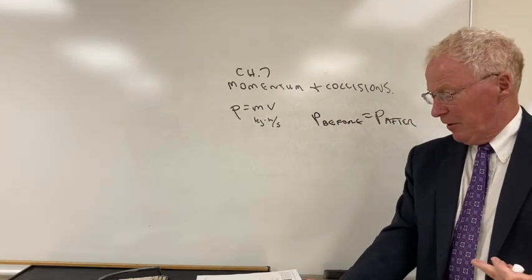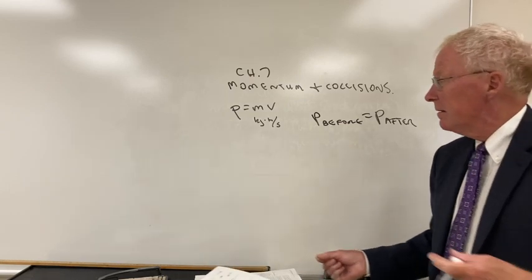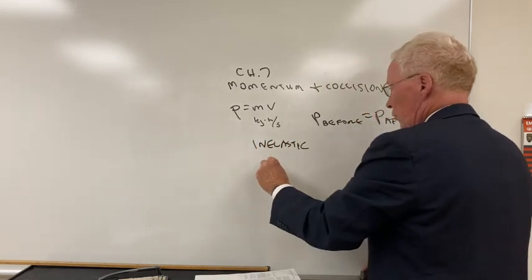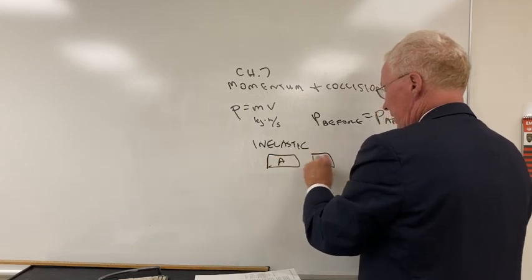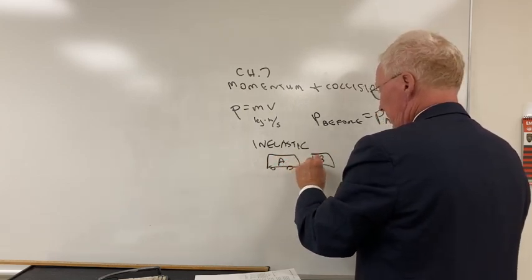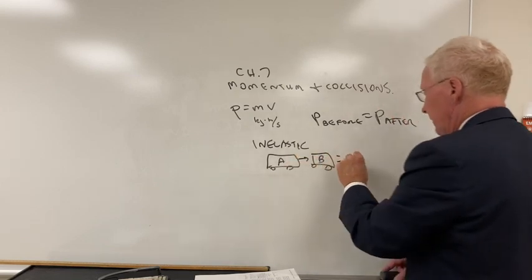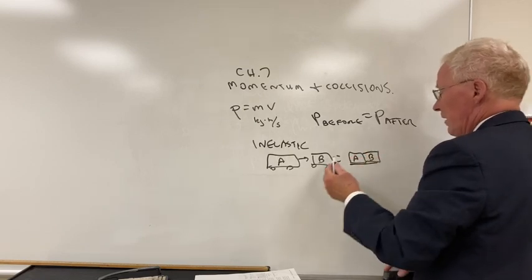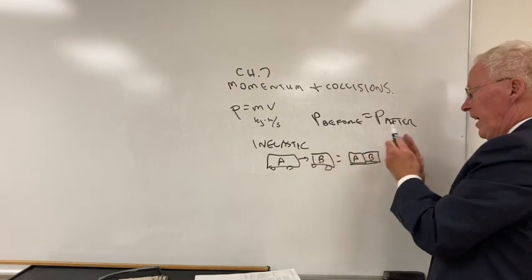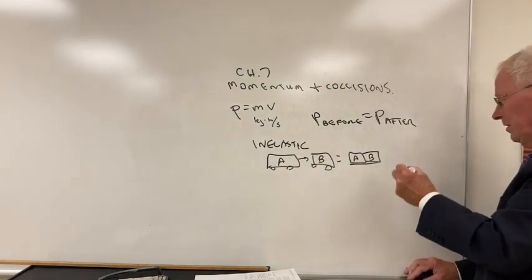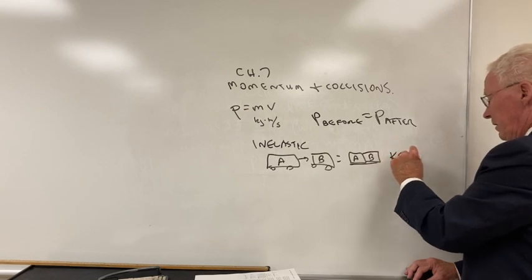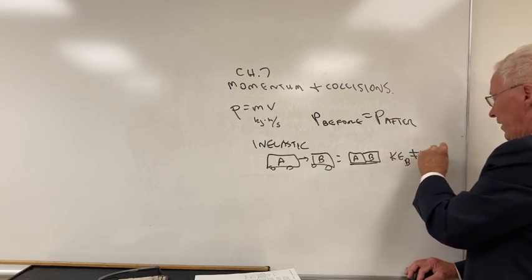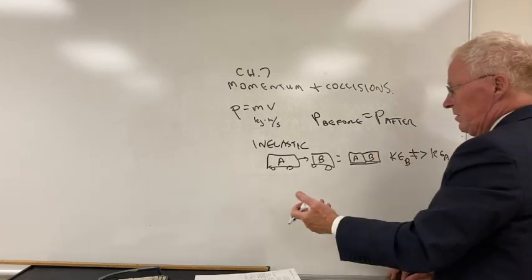So the type of collisions we had: Inelastic, where two, a and b, collide and they stick afterwards. So one collides with the other, they stick afterwards. This is an inelastic collision. The kinetic energy before is going to be not equal to, but in fact be greater than the kinetic energy afterwards. So there's energy lost in the collision.